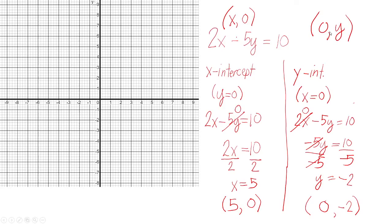Take note: when you write the x-intercept, it is written as (x, 0); when writing the y-intercept, that is (0, y). Do not interchange x and y — it's always x-intercept: x, 0; y-intercept: 0, y. When graphing, locate 5 on the x-axis — that's this point here. Then for (0, negative 2), that's on the y-axis at negative 2. Connect the two points, and there you go — that is the graph of this equation.